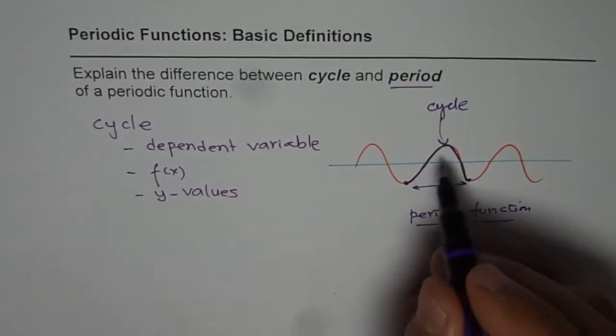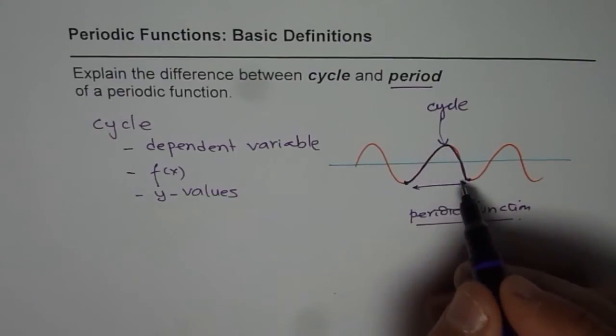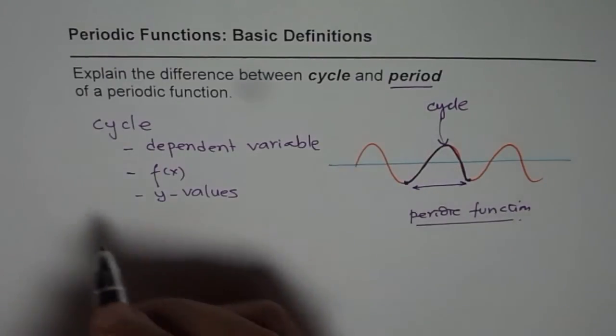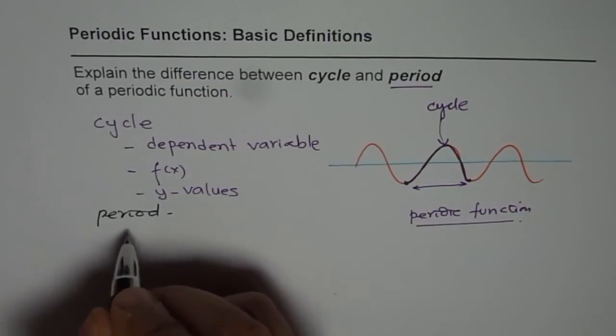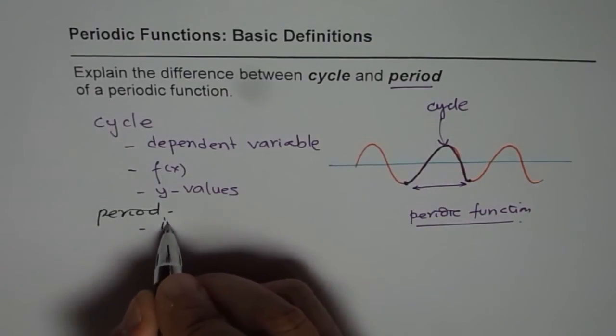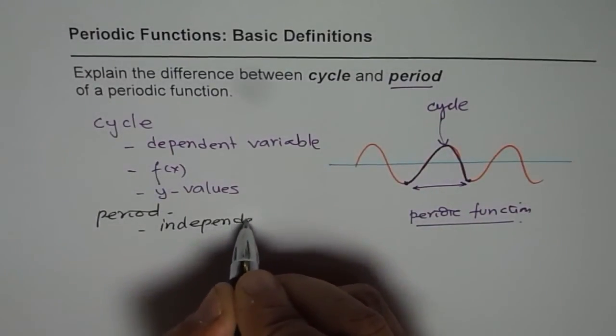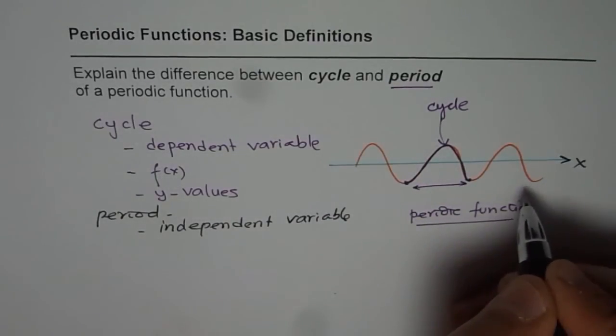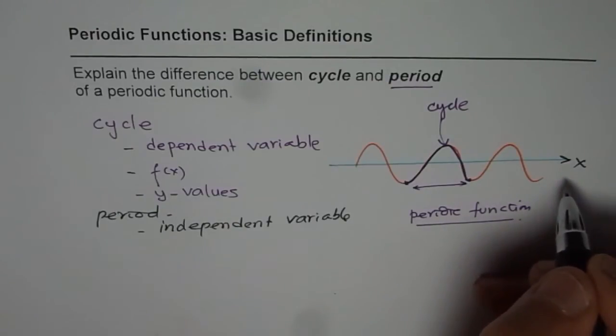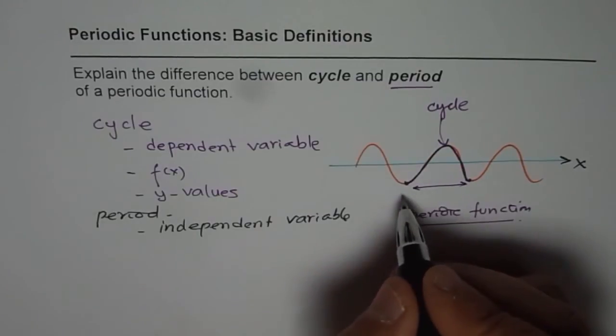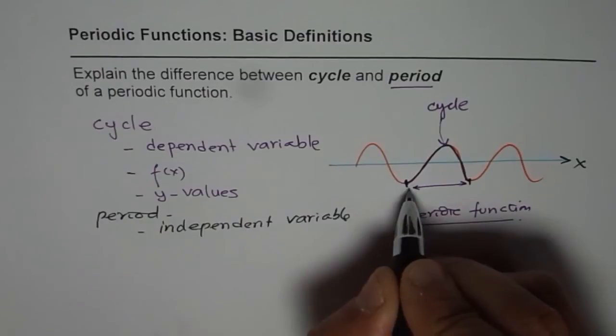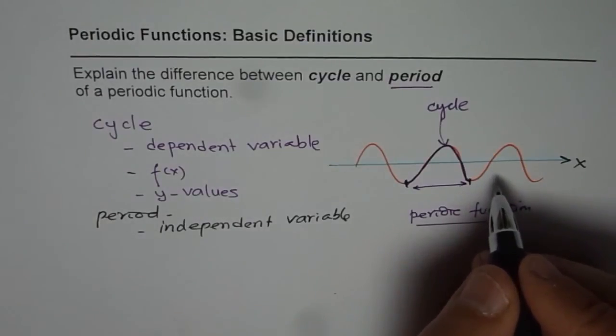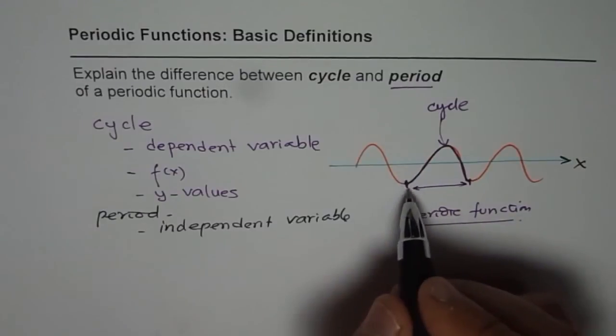Period, on the other hand, period is horizontal independent value. When we say period we are talking about independent variable, which normally is along the x axis. Let us say this is x axis. It could be time, distance or whatever. It is the independent variable which tells you the time or the period after which a cycle repeats. Do you understand? So it is the independent variable which marks the repetition of the cycle.